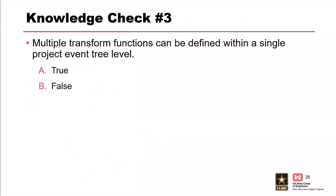Knowledge check: Multiple transform functions can be defined within a single project event tree level—true or false? The answer is false. When we have multiple transform functions, we need to provide each with its own unique level. Since the probability of a transform is one and we're only transforming from one variable to one variable, we can only contain one variable within each level of the tree.